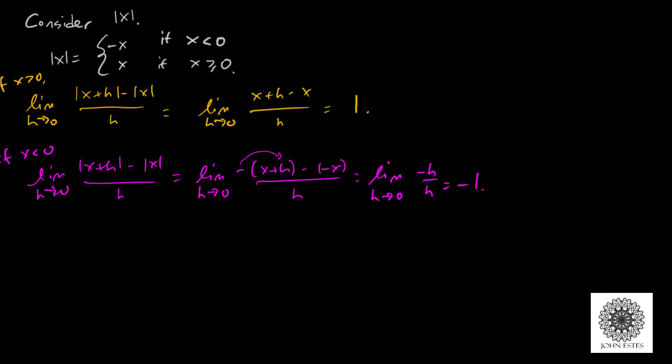So one way we could say this is the limit as h approaches 0 from the right becomes positive 1, and when I'm approaching 0 from the left, I get negative 1. Since the limit as h approaches 0 from the left of this expression does not equal the limit as h approaches 0 from the right, we know the limit does not exist at 0.